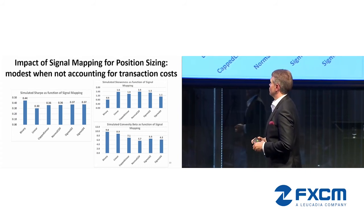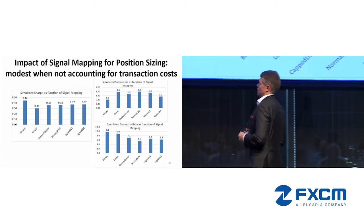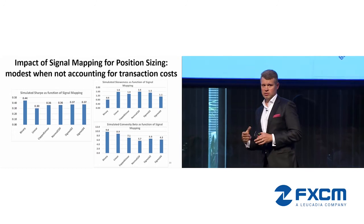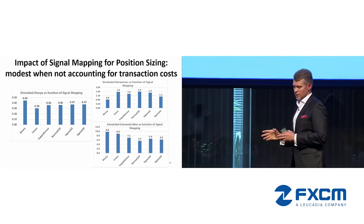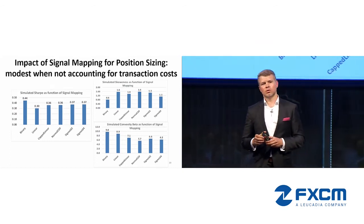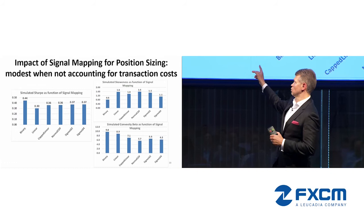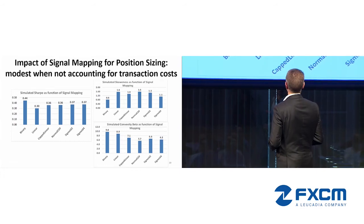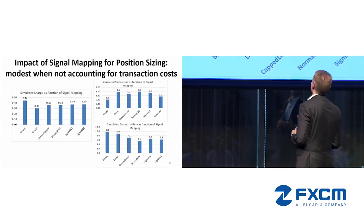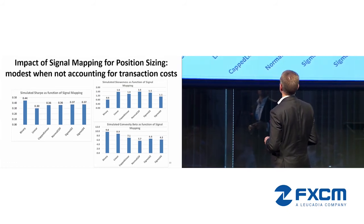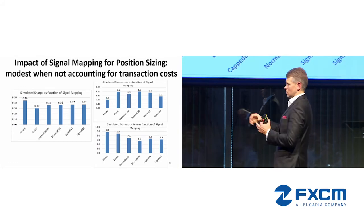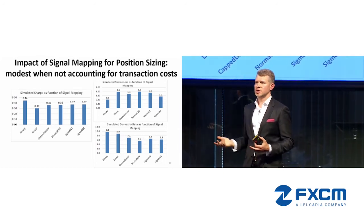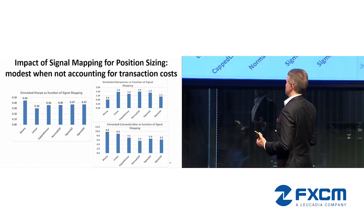Looking at Sharpe as a function of signal mapping: smooth functions generally generate more or less uniform Sharpe. Binary is an outlier, but when accounting for transaction costs, smoother mappings are preferred because binary tends to have too many switches. Skewness is relatively stable across different mappings. The sigmoid with a very steep slope tends to limit extreme signal values and somewhat loses convexity.